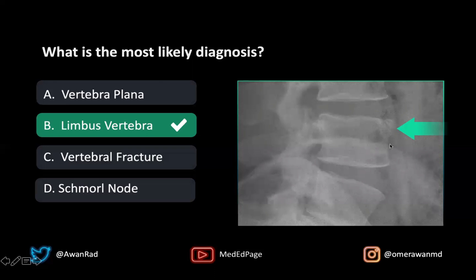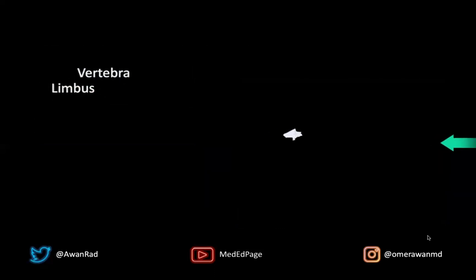A Schmorl's node usually occurs on the central vertebral body — we have an indentation or invagination of the intervertebral disc that goes into the vertebral body. That typically happens centrally, and we don't see that here. So the best answer here would be a limbus vertebrae.